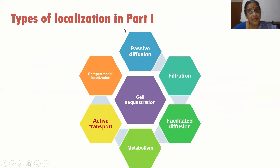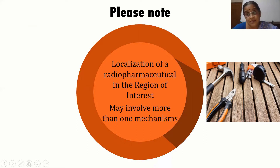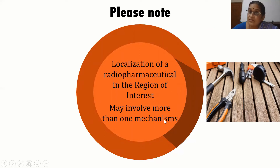For the types of localization we are going to see: passive diffusion, filtration, facilitated diffusion, metabolism, active transport, compartmental localization, and cell sequestration. Before starting, we have to know that localization of a radiopharmaceutical in the region of interest may involve more than one mechanism — like a mechanic using more than one tool, or using different transport systems to reach a destination. A radiopharmaceutical can use more than one mechanism to reach its target.